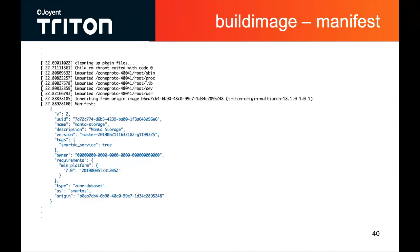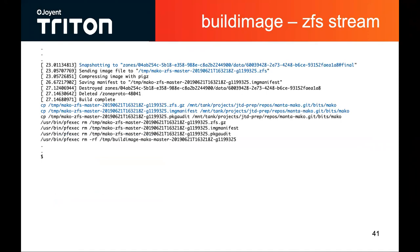At the end, we'll assemble an image manifest based on the metadata that we've passed it. Then finally we'll take a snapshot of it, produce the ZFS send stream, and produce the image file. And then eventually we'll copy the bits back into your workspace into the bits directory — in this case it's bits/mako that contains the output.